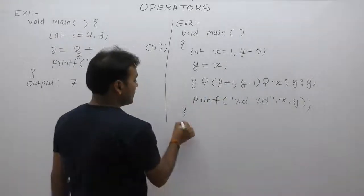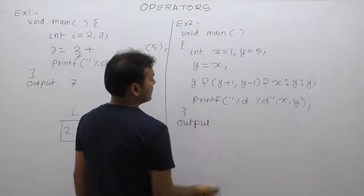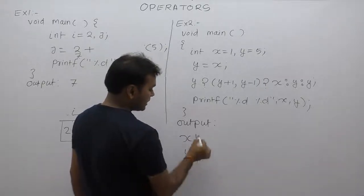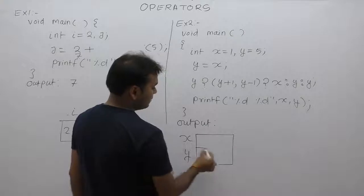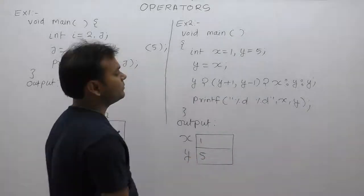second example. Next one, second example. In that case, we are declaring two variables. Variables x and y. What is the output of this program? There are two variables x and y with initial value 1 and 5. Next one,